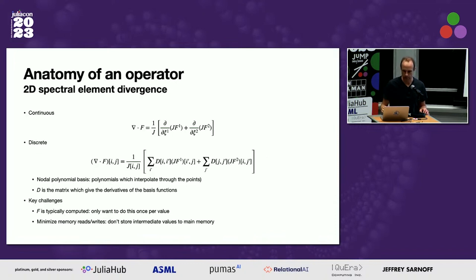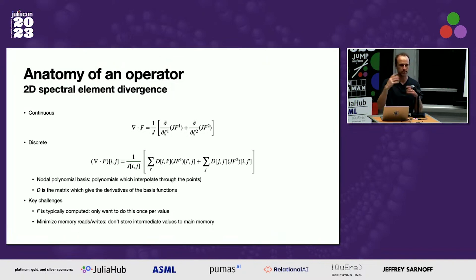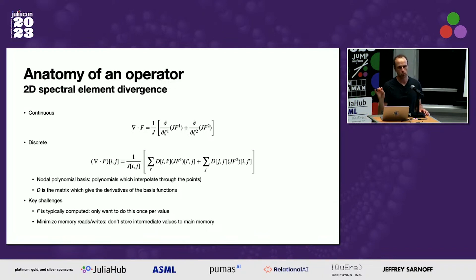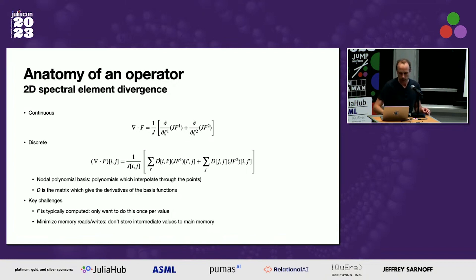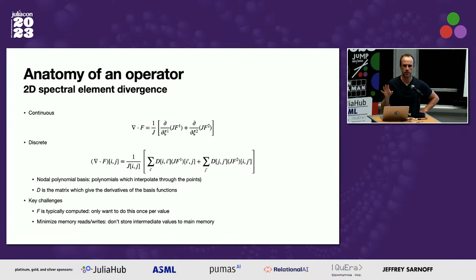What does an operator look like mathematically? This is the 2D spectral element divergence. The divergence in generalized coordinates — we use generalized coordinates because we're defining things on spheres; Cartesian coordinates give numerical artifacts. A divergence takes partial derivatives, sums them up with some weighting terms. Discretely, the key idea is you end up with very small matrix multiplications — your indices i and j are typically somewhere between three and eight, so they're pretty small matrices, but you have to do a lot of them. You do a multiply by matrix in one direction, then multiply by matrix in the other direction.